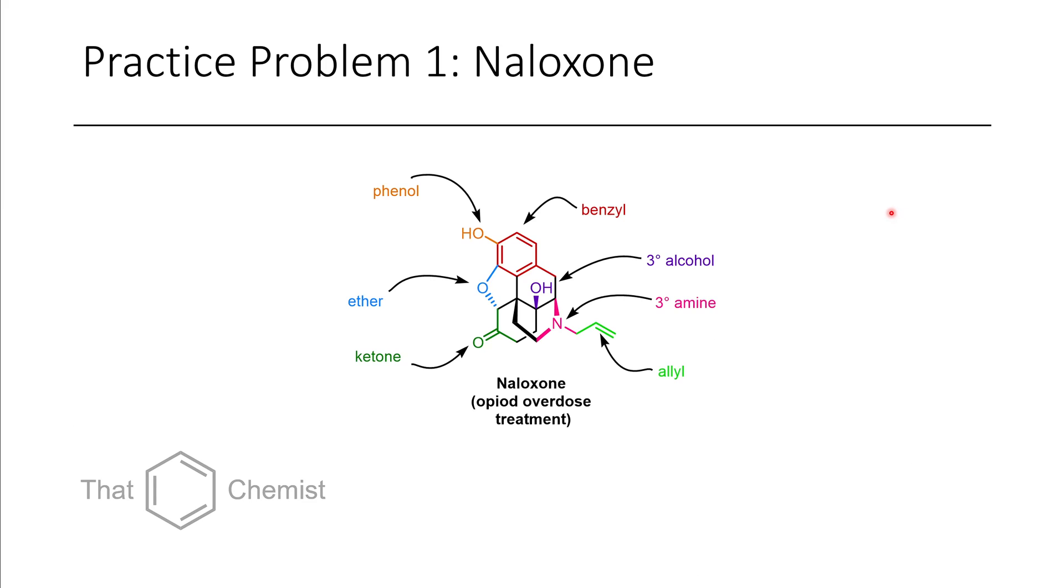So, the first problem from last lecture was naloxone, which is used for treating opioid overdoses. If someone takes too much fentanyl, the first responders will usually try and save the person with naloxone. If you look at the structure of morphine and related opiates, they tend to have a methyl group on this nitrogen here. But this allyl group ends up making it into an antagonist, which is kind of a cool structural function. So, this group here is an allyl group, as I just highlighted, connected to this nitrogen, which is a tertiary amine.